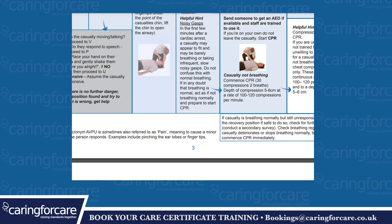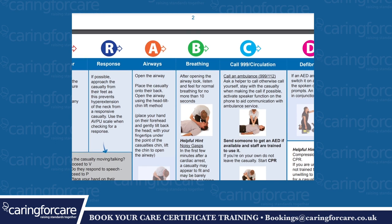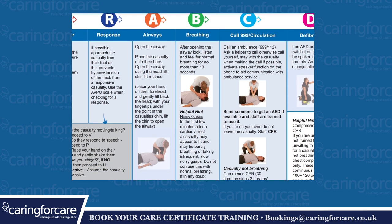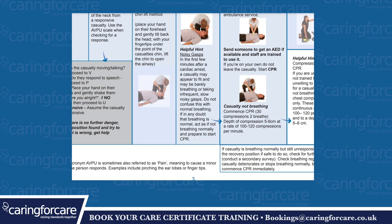Casualty not breathing: Commence CPR, 30 compressions and 2 breaths. Depth for compression: 5–6 cm at a rate of 100–120 compressions per minute. Defibrillation: If an AED arrives, switch it on and follow the spoken or visual prompts. An AED or defib is used in conjunction with CPR. Helpful hint: Compression only CPR. If you are unable, not trained to, or unwilling to give breaths for the casualty who is not breathing, give chest compressions only. These should be at a continuous rate of 100–120 per minute and a depth of 5–6 cm.